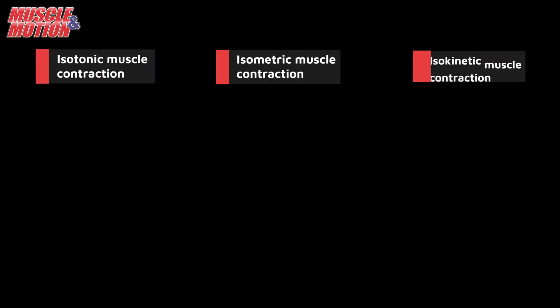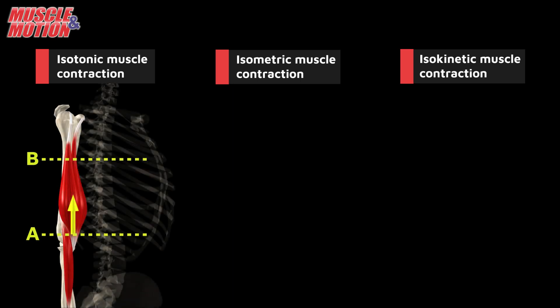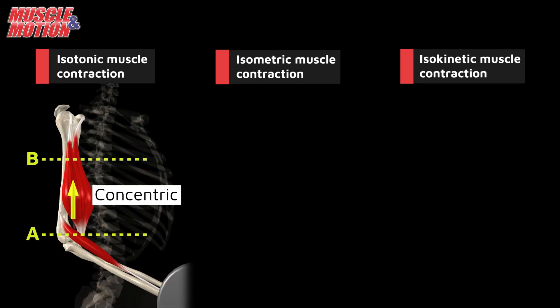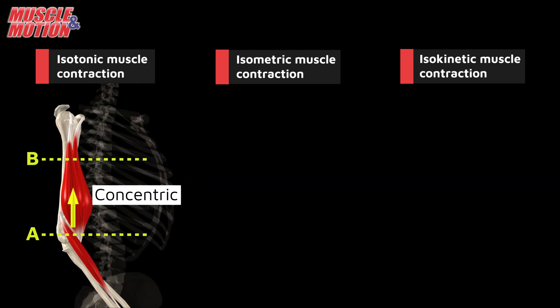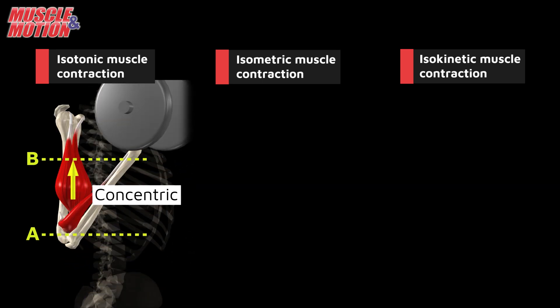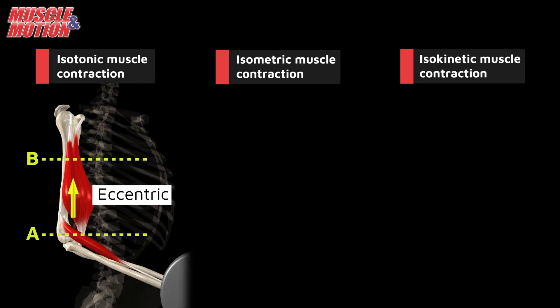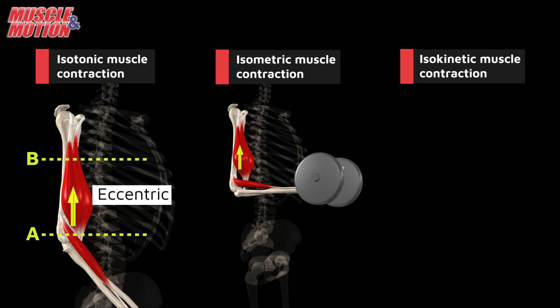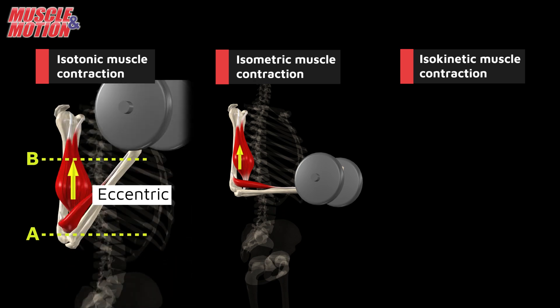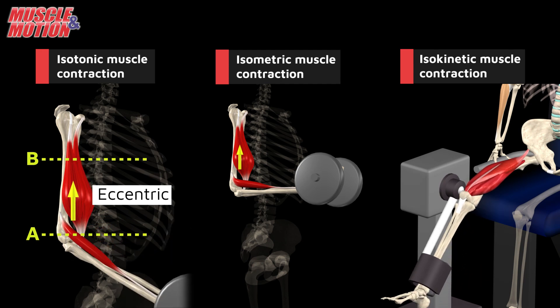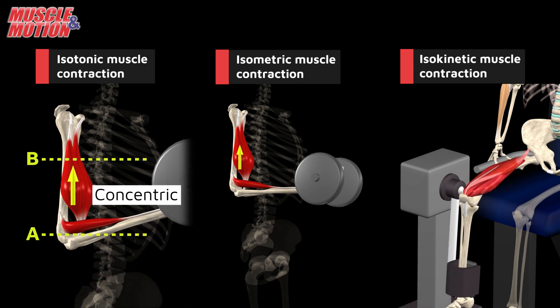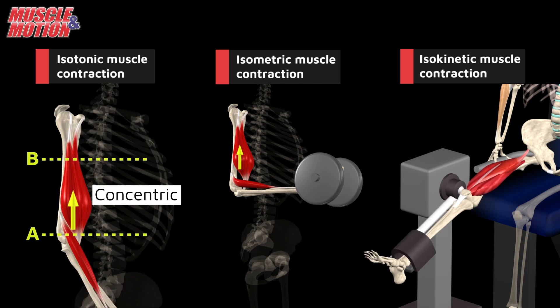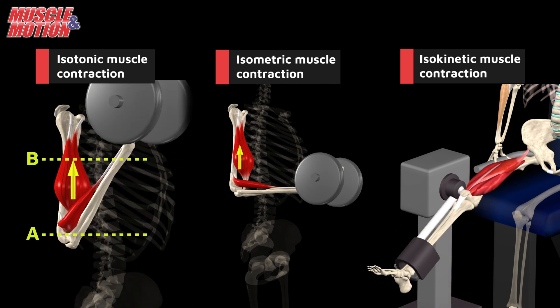In summary, we talked about three types of muscle contraction: isotonic, isometric, and isokinetic. Isotonic contraction includes concentric contraction, where the muscle is shortened under load, and eccentric contraction, where the muscle is lengthened under load. Isometric contraction is when the muscle doesn't change in length under load. Isokinetic contraction is when the muscle changes in length during contraction and produces movements of a constant speed.